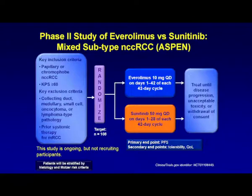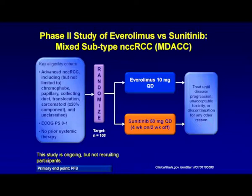Two ongoing trials address whether we should use sunitinib or everolimus upfront in non-clear cell histology. The ASPEN study, led by the Duke group, is for patients with papillary or chromophobe non-clear cell carcinoma — 108 patients randomized between upfront everolimus or sunitinib, with the primary endpoint being progression-free survival. A very similar study by MD Anderson is also called the ESPN trial. Both studies are not recruiting anymore. The ESPN trial has broader eligibility, including chromophobe, papillary, collecting duct, translocation, sarcomatoid, and unclassified — which will definitely affect the results.